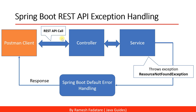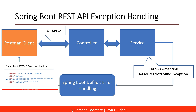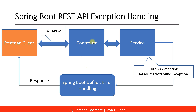This diagram shows the default Spring Boot error handling flow. When a client sends a request to the REST API, the REST API handles the request and passes it to the controller, then the service class validates the request parameters. If a parameter is not valid, it throws an exception, and Spring Boot's default error handling handles that exception, prepares an error response in a standard format, and sends it back to the client.